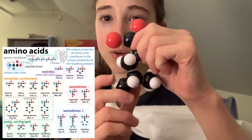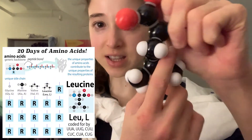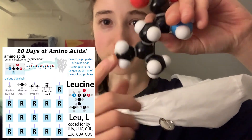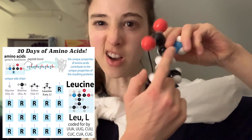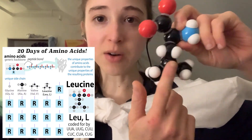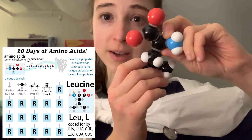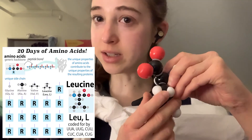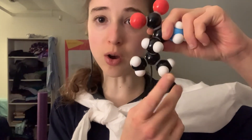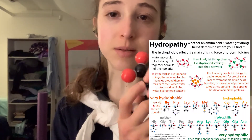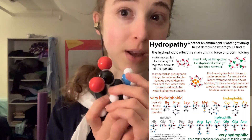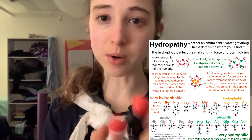Today we're going to talk about leucine, which has this isobutyl group. Yesterday we looked at valine where it just had this V sticking straight off the central alpha carbon. Here with leucine, we have another carbon in between. This is going to push the bulk away from the center and make it a little more flexible. You're also adding more hydrocarbon character, so you're adding more hydrophobicity, meaning it's going to be avoided by water even more than what we saw with valine.